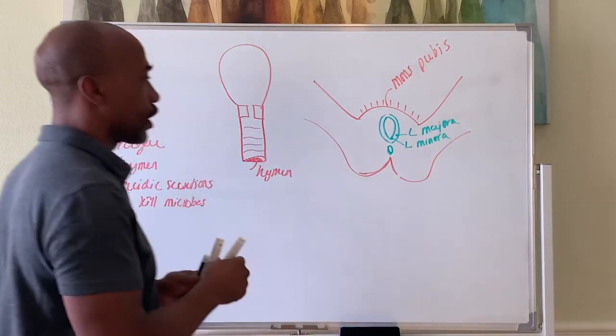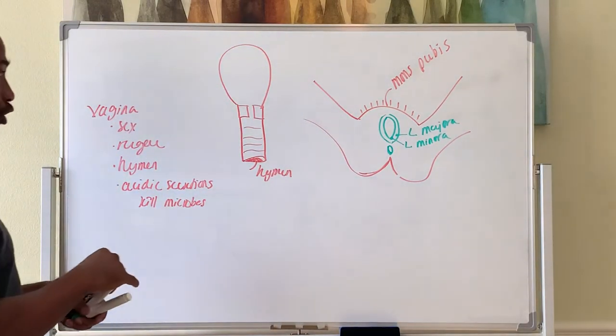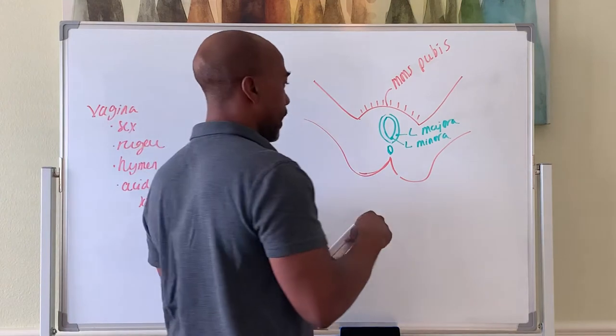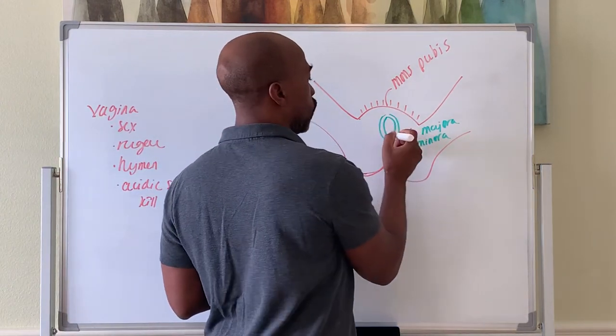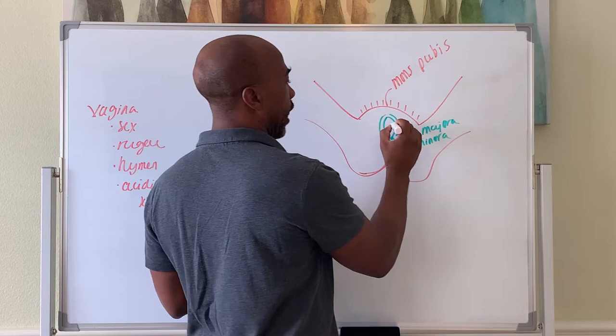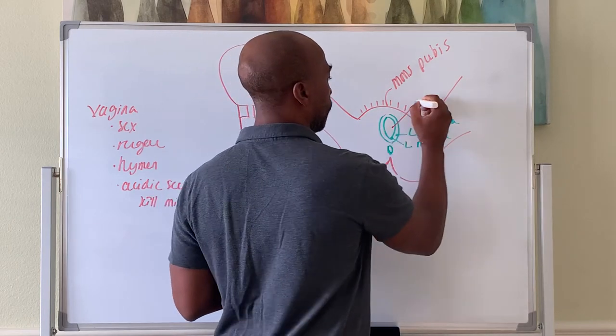You have the area enclosed by the labia minora. This area is called the vestibule.